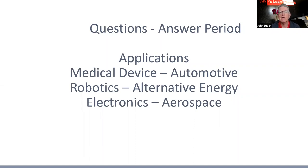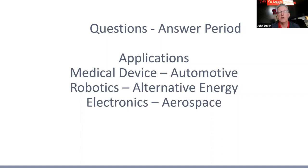The second poll question: does thermal cycling require different chemical solutions for thread locking? Overwhelmingly, people said yes — different materials are designed for different temperatures. That is correct. Thermal cycling is the heating and cooling that happens in different environments — for example, solar fields in the desert that get hot during the day and cold at night. There are different chemical solutions for thread locking, and we can help you with that.